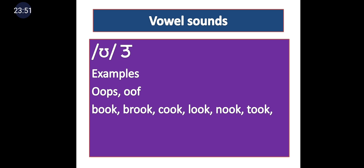Short U — /ʊ/ — uses a U-shaped symbol in the slant bar. Examples: oops, oof, book, brook, cook, look, nook, took. Remember this symbol carefully — it is the one you need to keep in mind most for phonemic transcription.